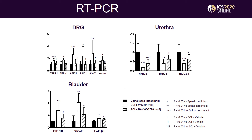In L6-DRG, messenger RNA expressions of TRPA1, TRPV1, ASIC1/2/3, and P2X3 were significantly higher in vehicle-treated SCI mice than in spinal intact and BAY-treated SCI mice. In EUS-DRG, messenger RNA expressions of nNOS, eNOS, and sGC-α1 were significantly lower in vehicle-treated SCI mice than in spinal intact and BAY-treated SCI mice.